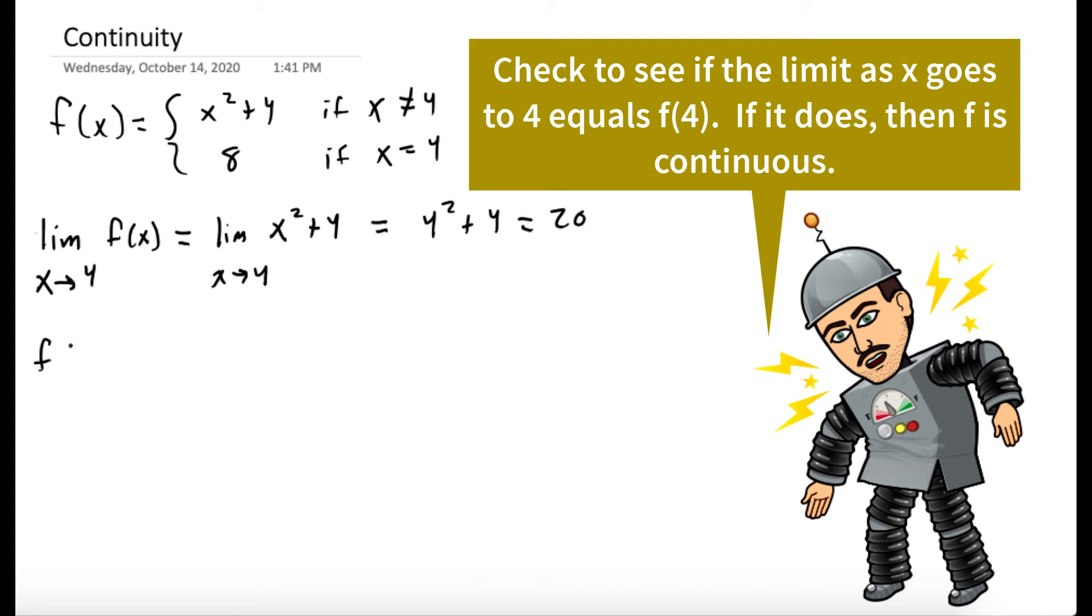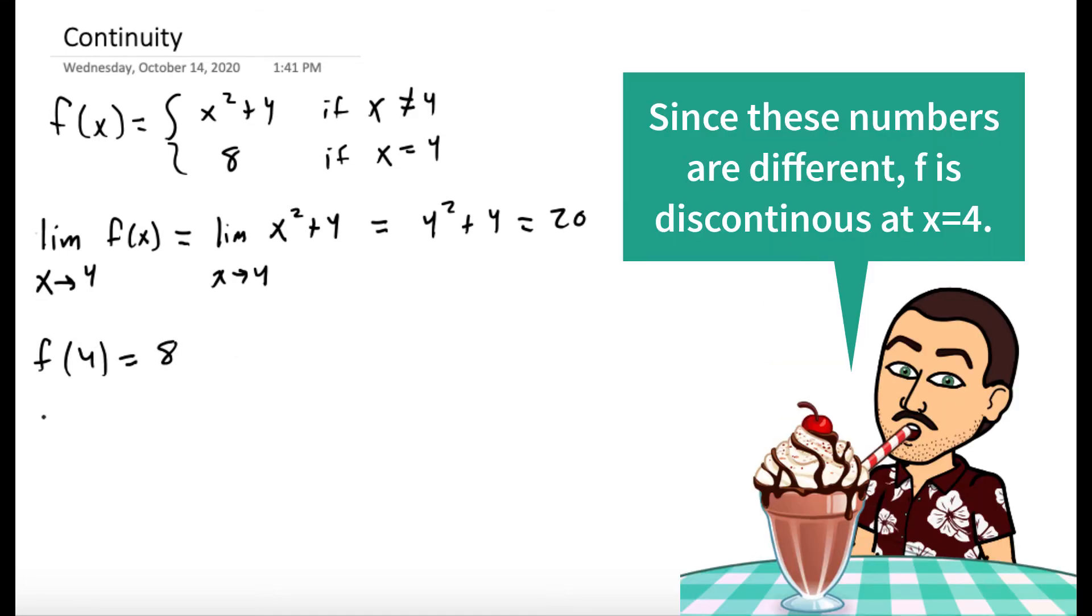Now we need to evaluate the function at 4. So f of 4, well that's the second part of our piecewise function, it's just 8.